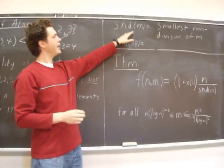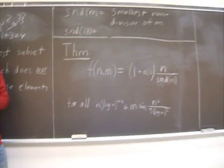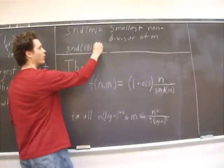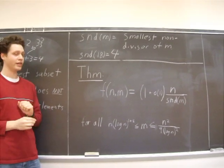One more definition: SND of m will be the smallest non-divisor of m. So SND of 18 is 4, because 18 is divisible by 1, 2, and 3, but not 4.